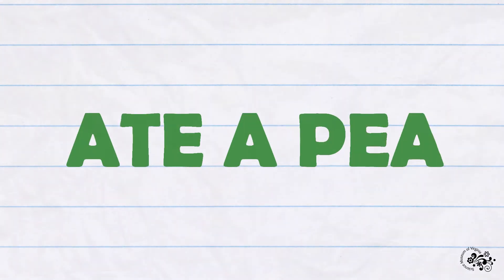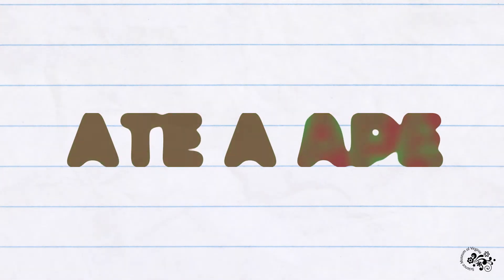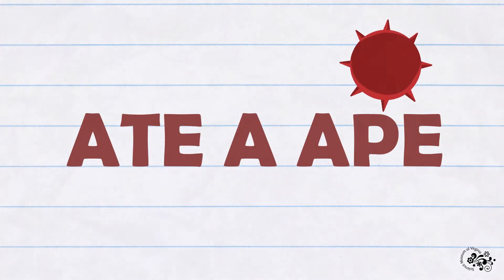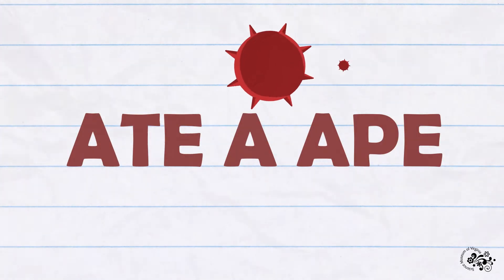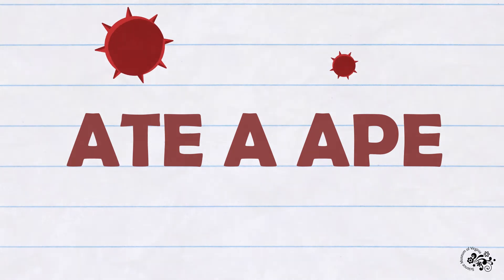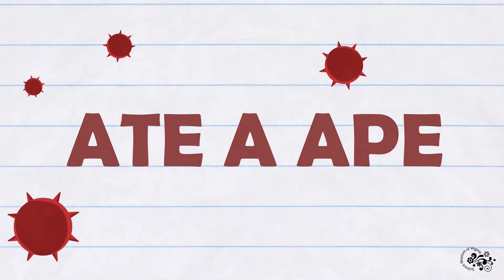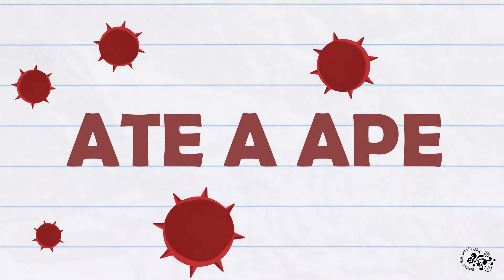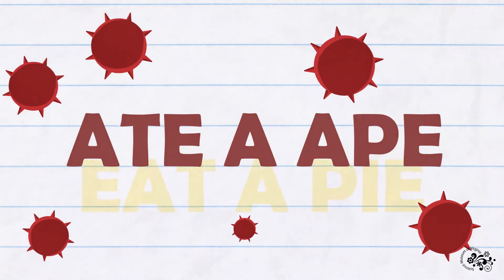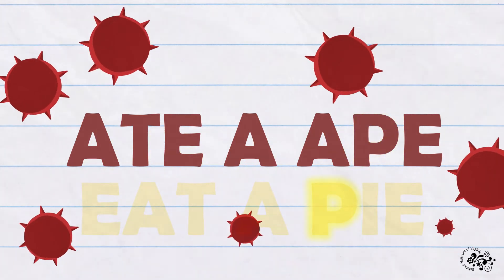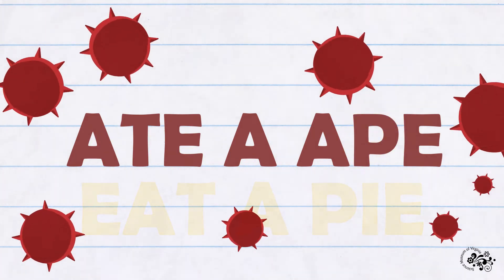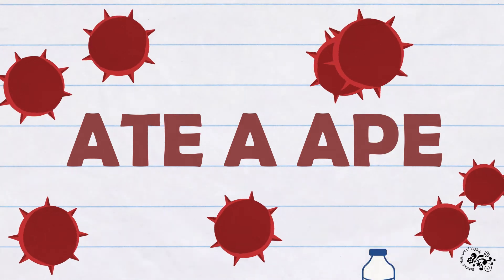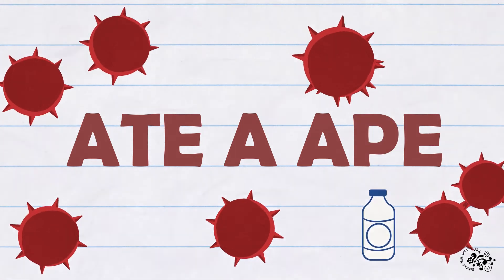Meanwhile, 'ate a pie' also mutated to 'ate a ape.' This one is scary because it spreads even more easily between hosts than earlier variants, and because the way we've been recognizing the virus is by looking at that P in the word. When the P is at the beginning of the word, it's easy to see, but now it's in the middle and harder to recognize.